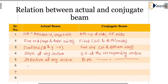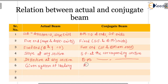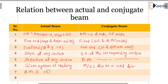The sixth difference is the given system of loading. For the actual beam, whatever loading is given, we use it to calculate the bending moment diagram. But for the conjugate beam, we consider the M/EI diagram as the load diagram. The seventh difference concerns the bending moment diagram: if it is positive (sagging, as in a simply supported beam), then the M/EI diagram is positive and loading is in the downward direction.